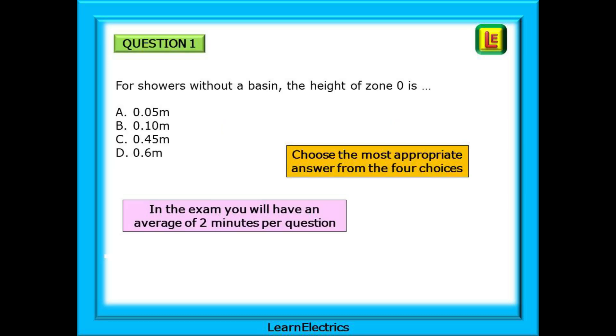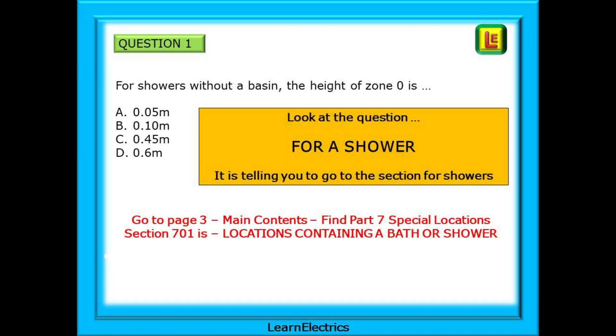Let's look at some typical exam type questions now and some of the areas where you might go wrong. Question 1 asks: For showers without a basin, the height of zone 0 is... And then 4 possible answers. Choose the single most appropriate answer. The exam is arranged so that you will have an average of 2 minutes per question in the exam. That's in the exam. But take the time in these training videos to understand how you find the answers.